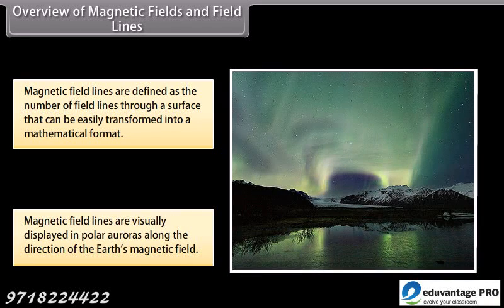Magnetic field lines are visually displayed in polar auroras, where visible streaks of lines are created along the direction of Earth's magnetic field.